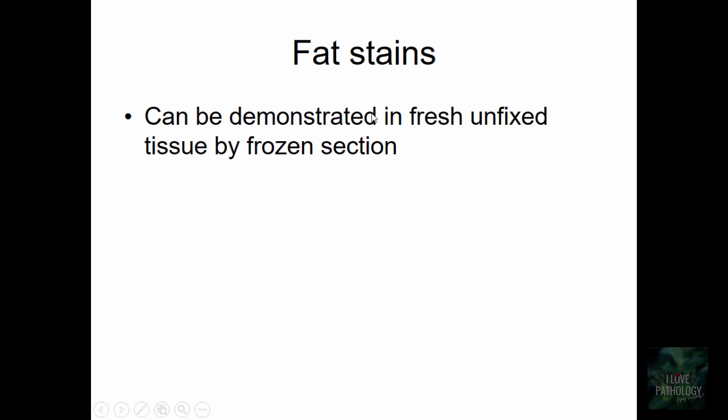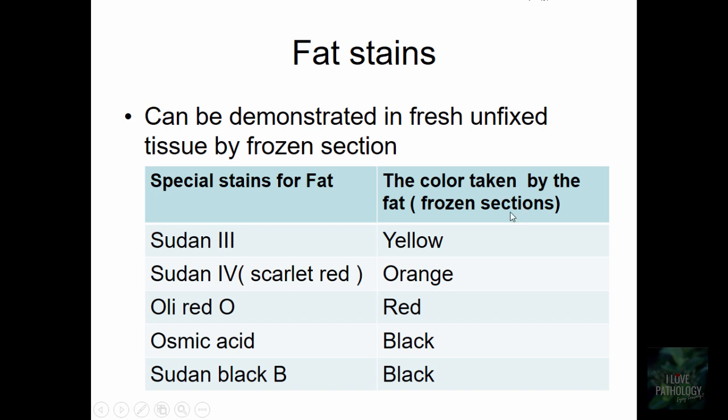How can fat be demonstrated when you see a cell with empty-looking spaces? These spaces could represent fat, glycogen, or just plain water. Fat can be demonstrated in fresh, unfixed tissue by a process called frozen section, because during routine processing in histopathology, the fat gets dissolved. Special stains for fat include Sudan 3 (fat takes yellow color), Sudan 4 (orange), oil red O (red), and osmic acid and Sudan black B (black). This is the oil red O stain done on an unfixed frozen section — all those empty-looking vacuoles are now stained an intense red color.